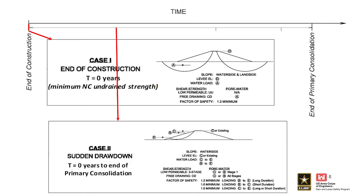For Case 2, we're looking at the rapid or sudden drawdown condition. For free-draining granular soils, we would use drained strengths. For low-permeability soils, we address this using a three-stage approach: the first stage using effective stresses, the second stage using undrained shear strength — thinking about where we are in the history of this embankment and how the soils will react from a strength perspective — and then the third stage uses either effective stresses or undrained total stresses depending on which condition results in the worse case. This could vary along the slip surface, so for sudden drawdown we're juggling a few conditions to find our worst case scenario.